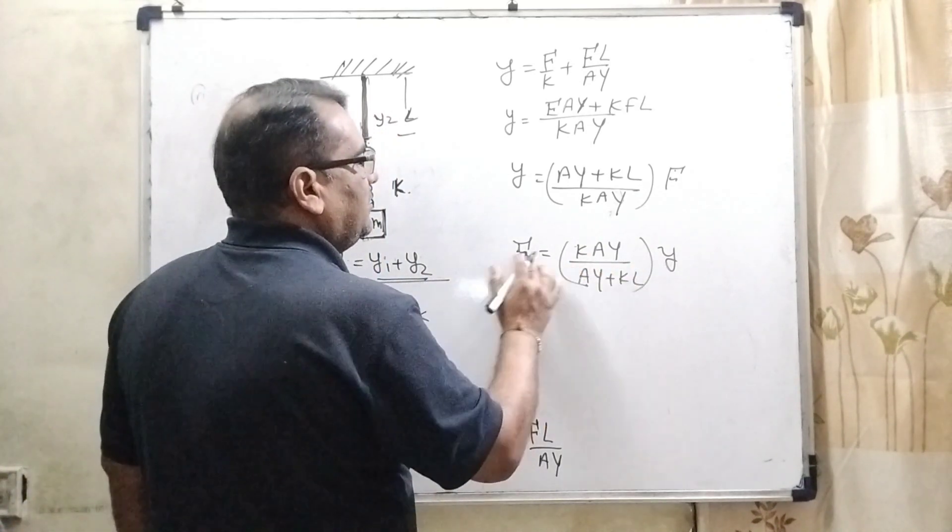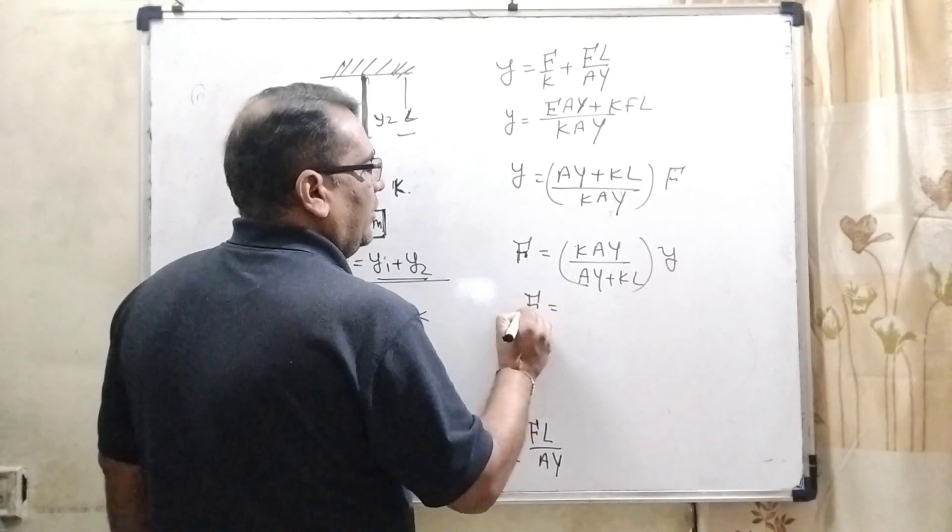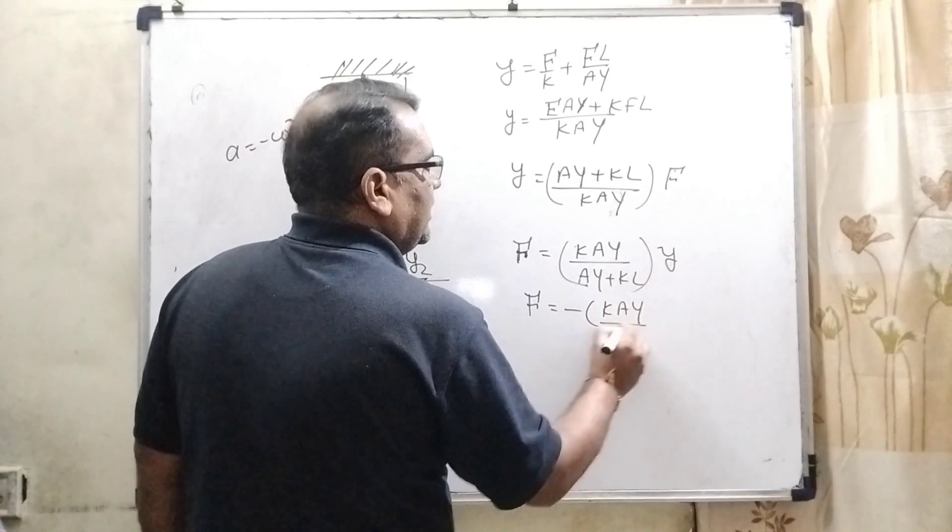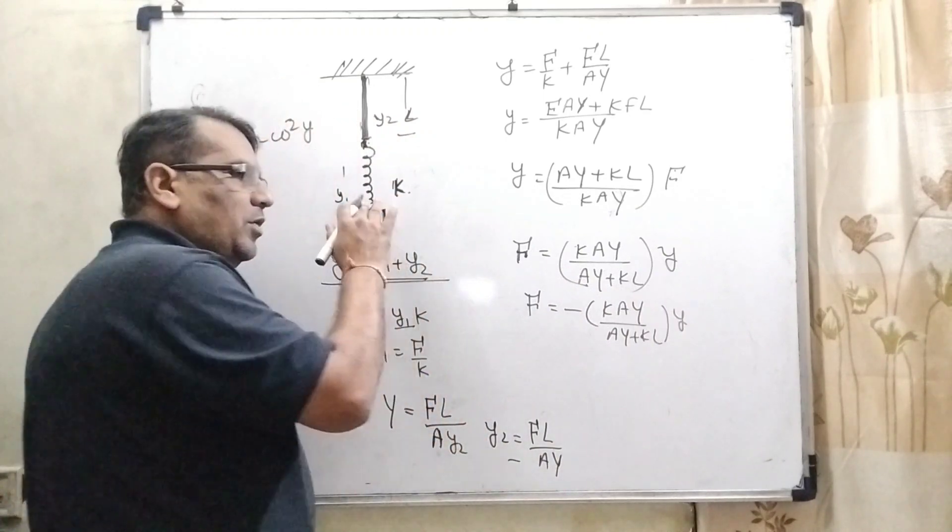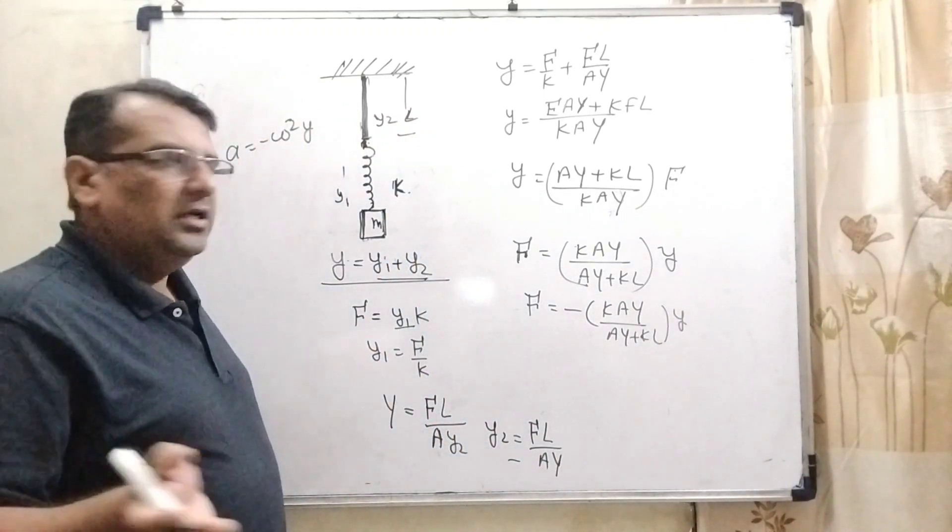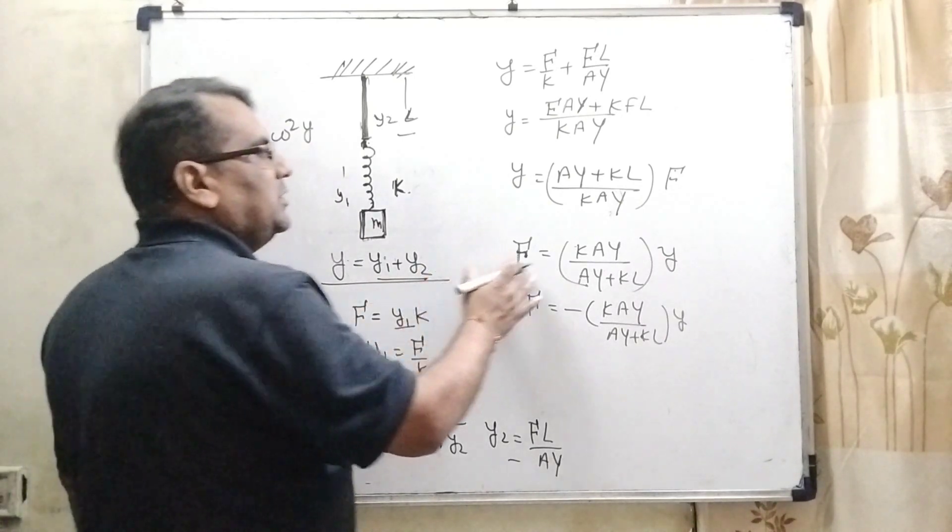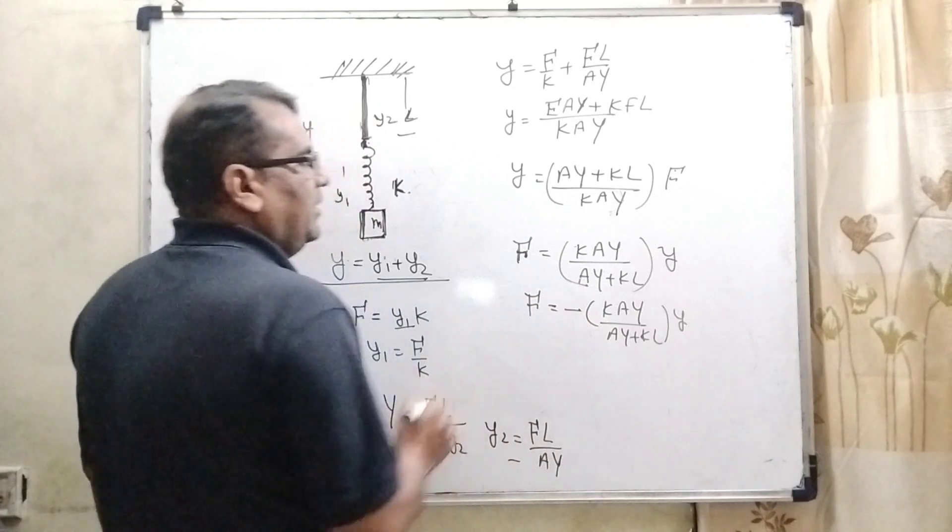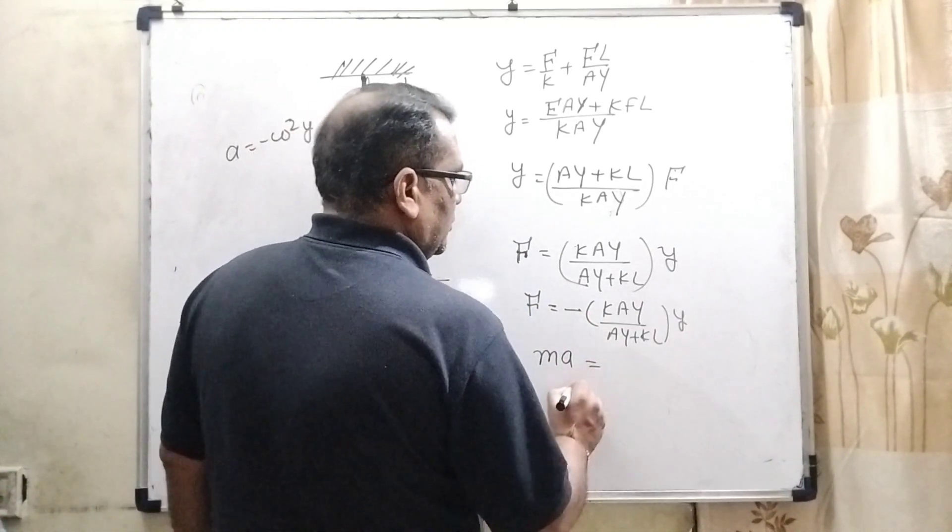So therefore F equals minus. It is very important. Why we have to write here minus? Because it is being made to oscillate, as given in the question, the whole system is oscillating. So it means this force is against this y. So therefore we have to put here negative sign, and force can be written as mass into acceleration.